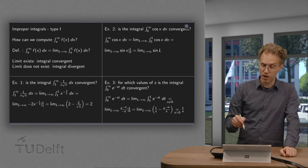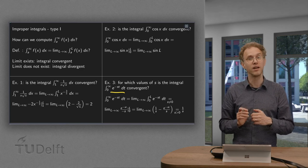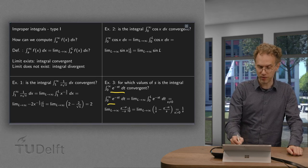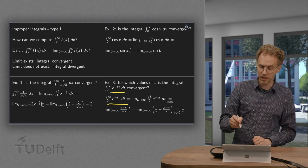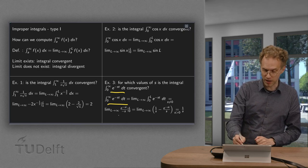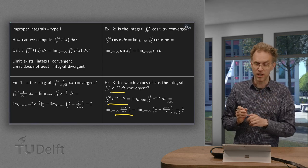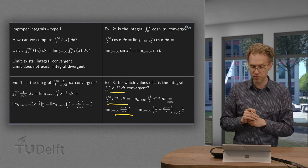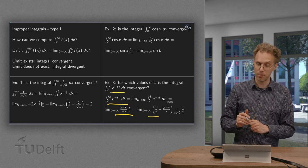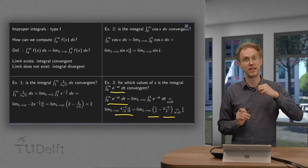Next example: we have the integral of e to the power minus st dt from 0 to infinity, and the question is, for which values of the parameter s is this integral convergent? We have to integrate with respect to t, which is easy. The antiderivative of e^(−st) equals e^(−st) over minus s, provided s is not equal to 0. We will handle the s equals 0 case shortly afterwards. Plugging in the boundaries: the lower boundary gives 1 over s, and the upper boundary gives e^(−sl) over s.